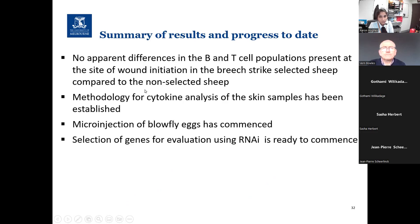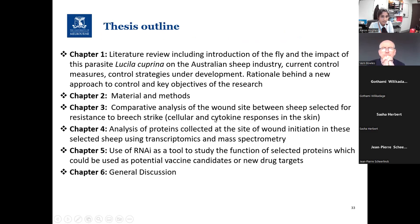In summary of results and progress to date: there is no apparent difference in the T and B cell populations present in the wound initiation site between fly strike selected and non-selected sheep. Methodology for cytokine analysis of skin samples has been established, and microinjection blood trials are underway. In the coming weeks I plan to select genes for evaluation using the RNAi technique. My thesis outline includes Chapter 1 covering the literature review, introduction to fly strike, current control methods, rationale, and key objectives; Chapter 2 covering materials and methods; and subsequent chapters describing the aims used to achieve the objectives.